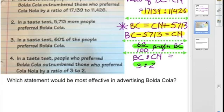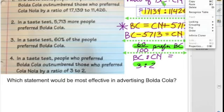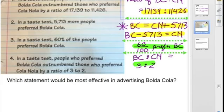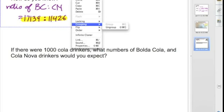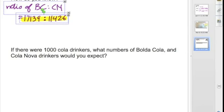Well, we know that statement 1 says Bolda Cola to Cola-Nola is 17,139 compared to 11,426. So, I'm going to take that statement. And that's kind of our main given statement. That's kind of what we want to look at compared to everything else that we've been doing. We really want to know which of these works.